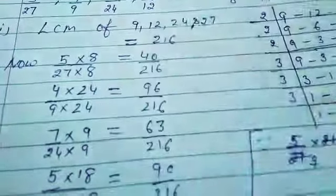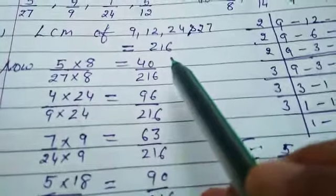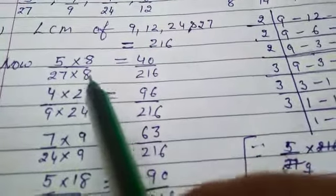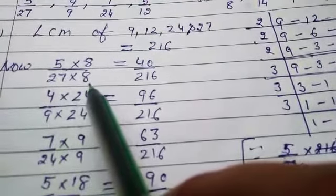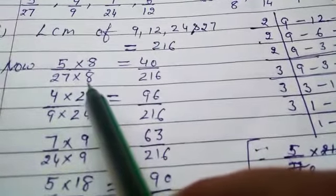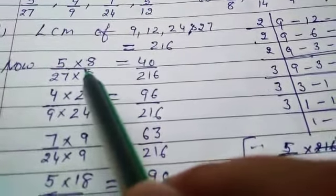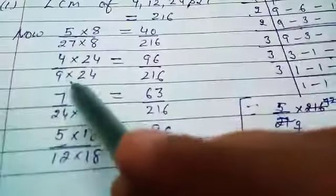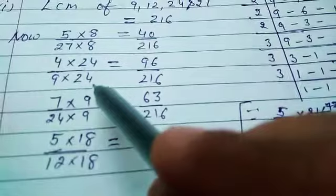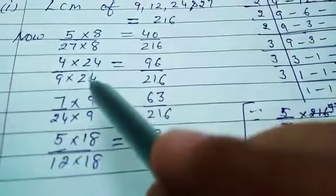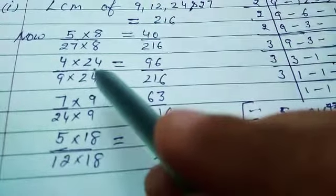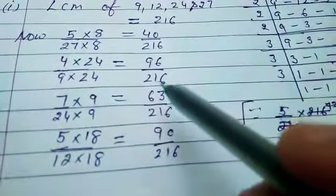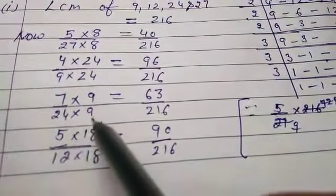The LCM is 216. So 5/27 when multiplied by 8 gives 40/216. Similarly, 4/9 multiplied by 24 gives 96/216. Then 7/24 multiplied by 9 gives 63/216.